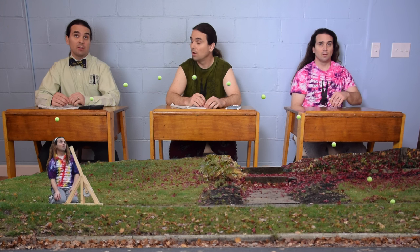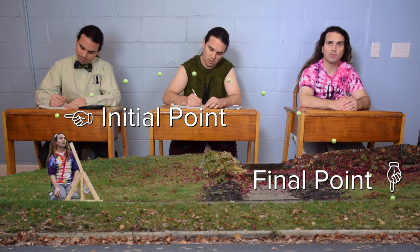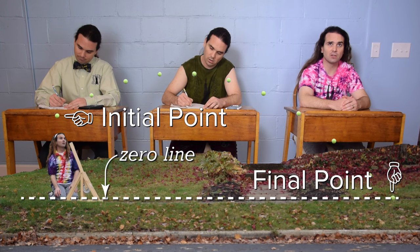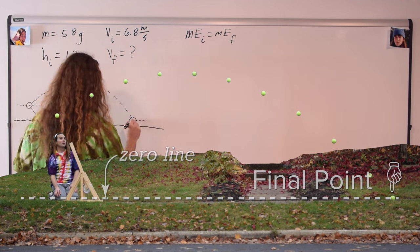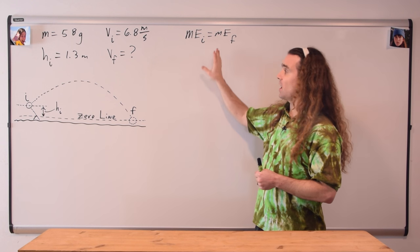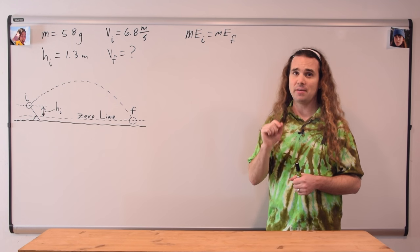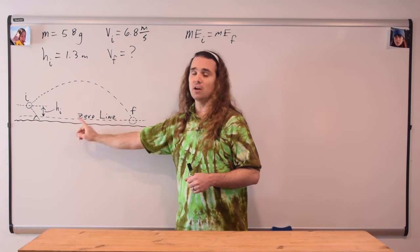Bo, what should we do now? We need to solve the equation. That's actually not very helpful. Billy and Bobby, could you please help out Bo? We need to identify our initial and final points and the location of the horizontal zero line. The initial point is where the tennis ball leaves the trebuchet and the final point is right before the ball lands on the ground. Let's set the horizontal zero line at the final height of the ball. Remember, whenever you are working with conservation of mechanical energy, you need to specifically identify the locations of the initial point, the final point, and the horizontal zero line.